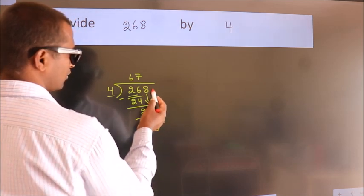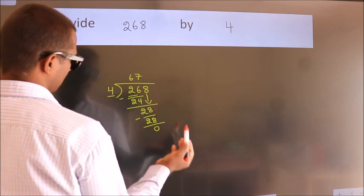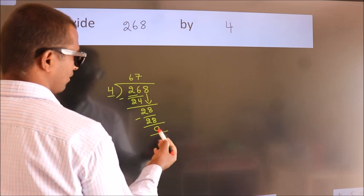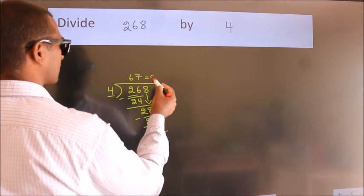After this, no more numbers to bring down. And we got remainder 0. So this is our quotient.